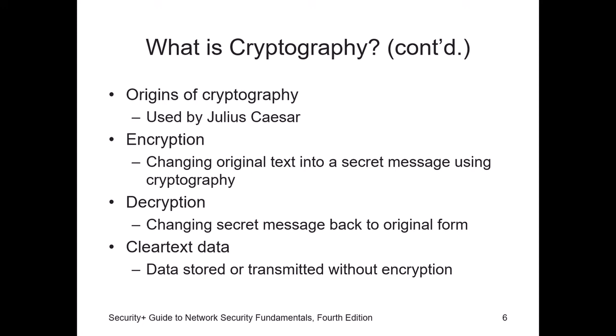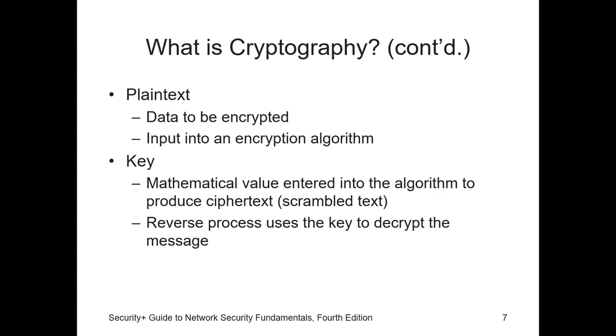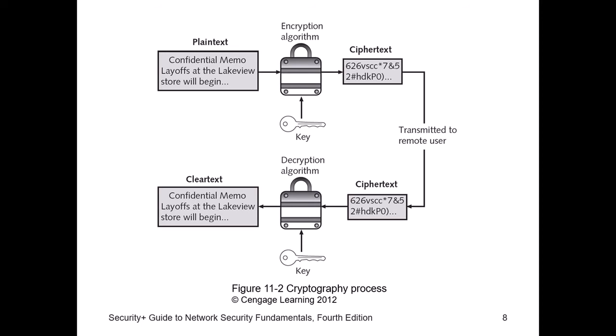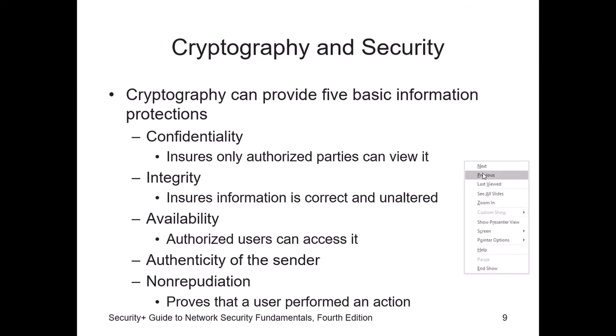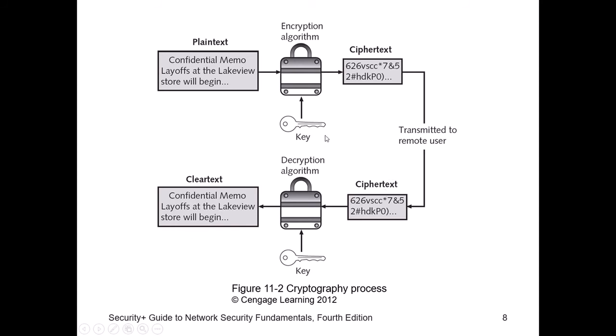Cryptography goes back all the way to Julius Caesar, when he was sending encrypted messages to soldiers in the field on how to attack their enemies. The key is a mathematical value used to scramble the data. The plain text is the actual data that you are trying to send. You take the plain text, encrypt it with the key, get the encrypted data, and transmit it. The receiver uses the same key to decrypt it and can see the clear text again.